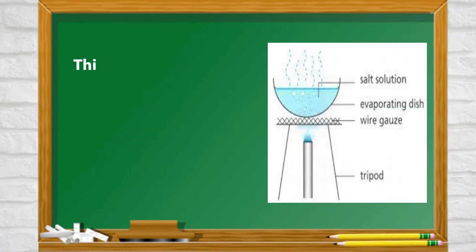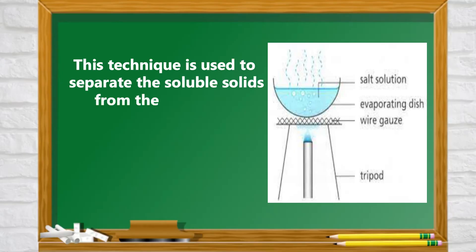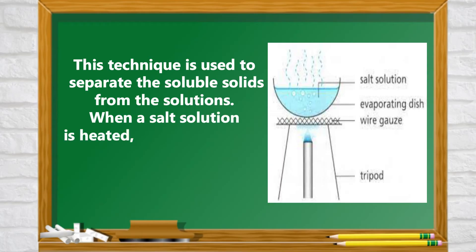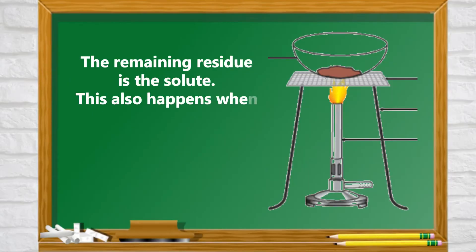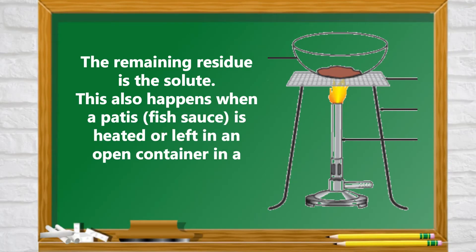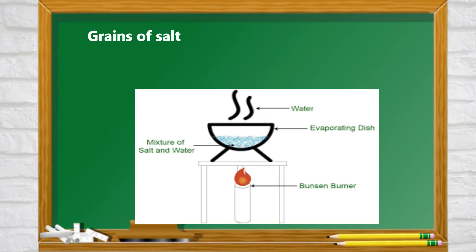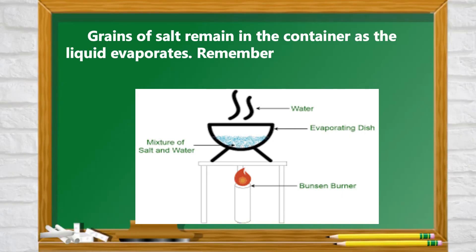Evaporation. This technique is used to separate the soluble solids from solutions. When a salt solution is heated, water evaporates and salt remains in the container. The remaining residue is the solute. This also happens when patis or fish sauce is heated or left in an open container in a warm room. Grains of salt remain in the container as the liquid evaporates.